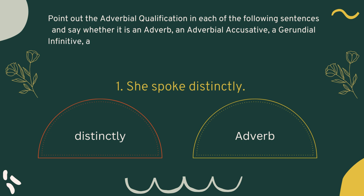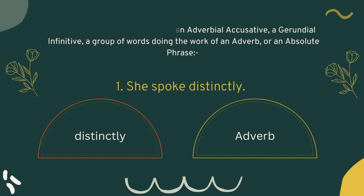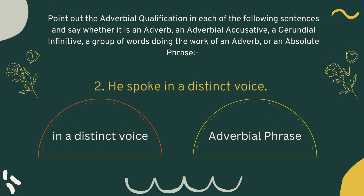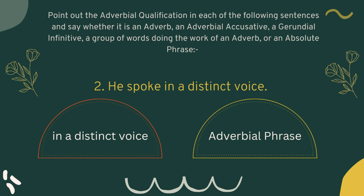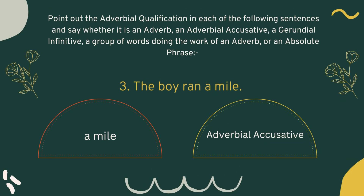or an absolute phrase. Sentence one: 'She spoke distinctly.' Here 'distinctly' is an adverb. Number two: 'He spoke in a distinct voice.' Here the adverbial qualification is 'in a distinct voice' and this is an adverbial phrase. Number three: 'The boy ran a mile.' 'A mile' is the adverbial qualification and this is an adverbial accusative.